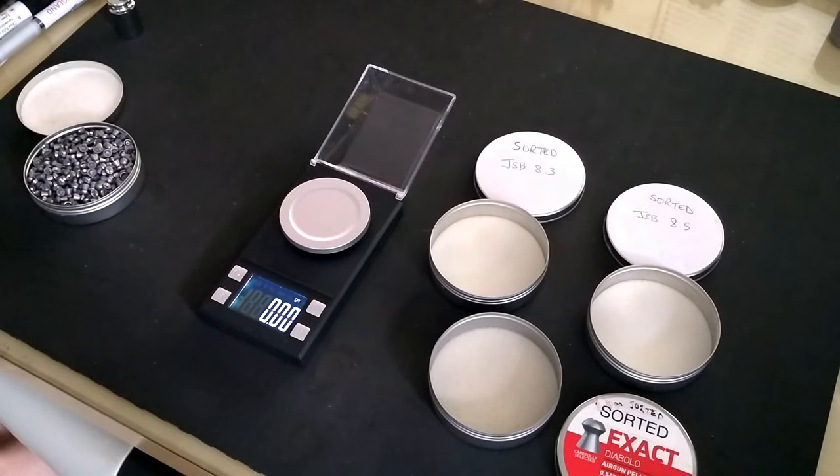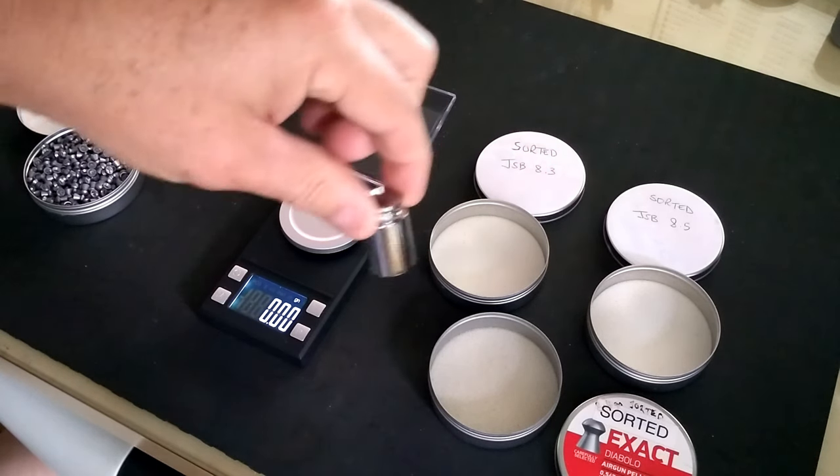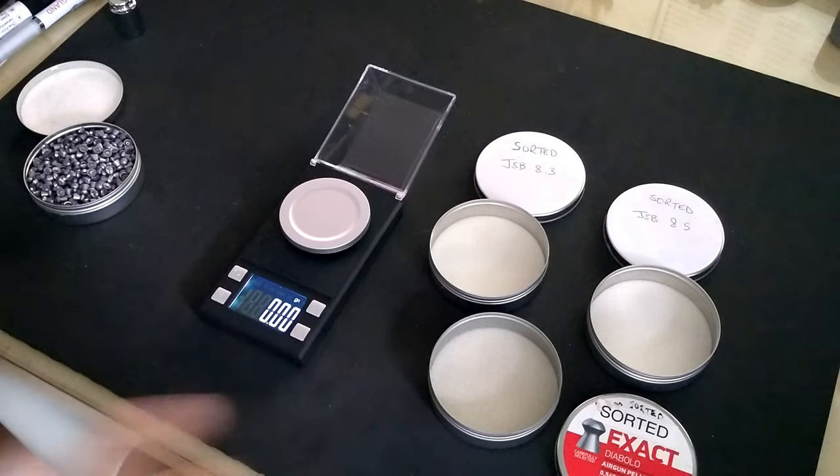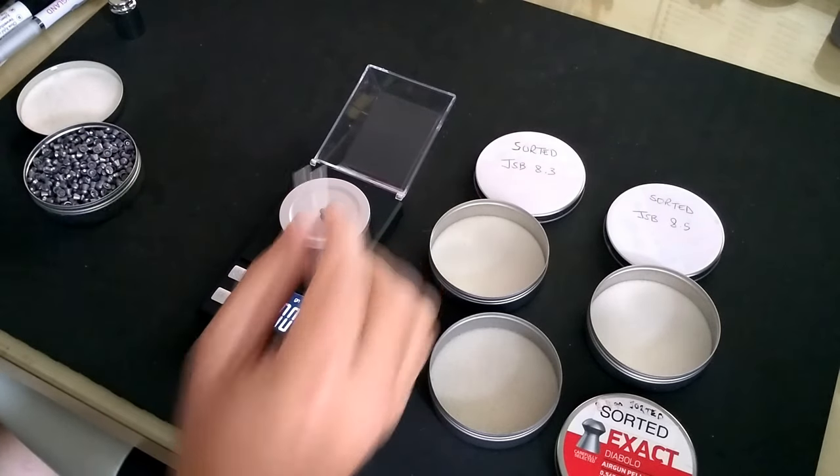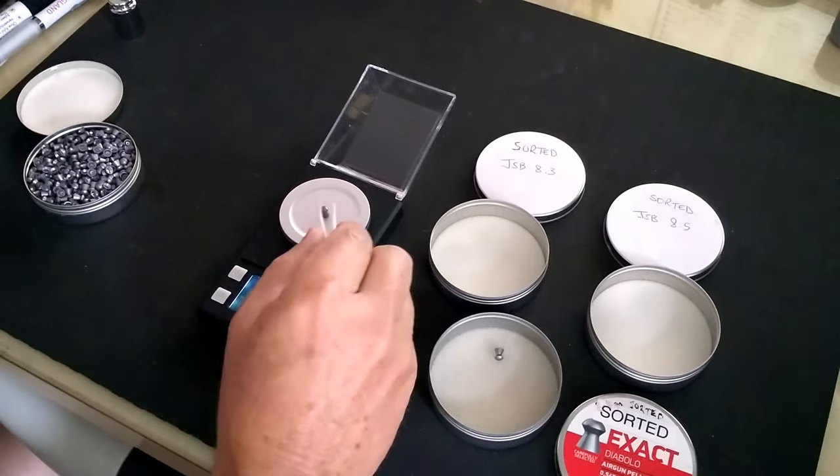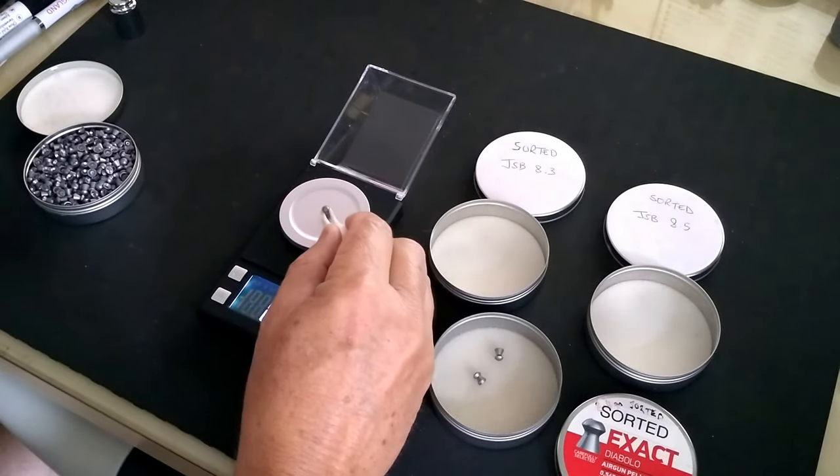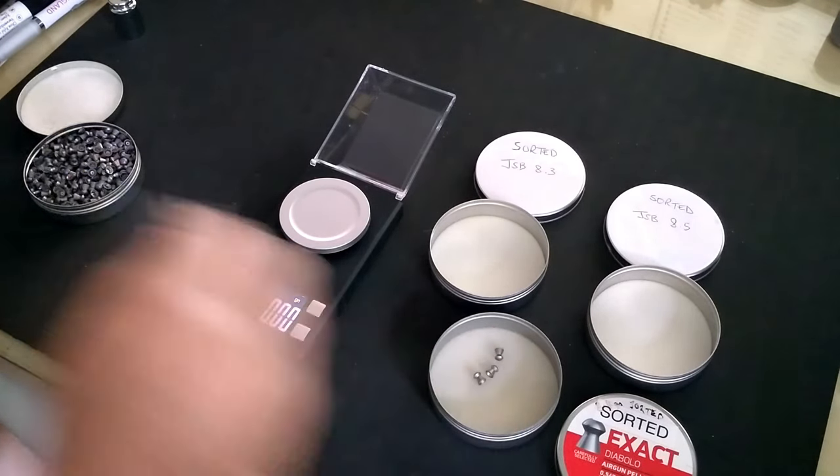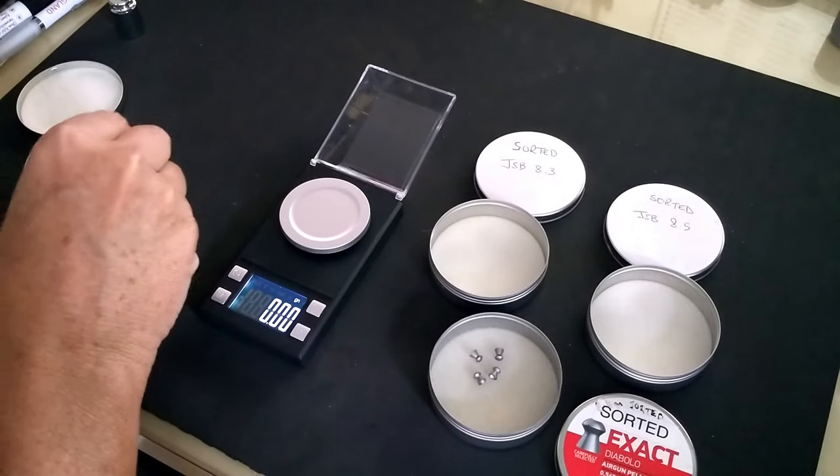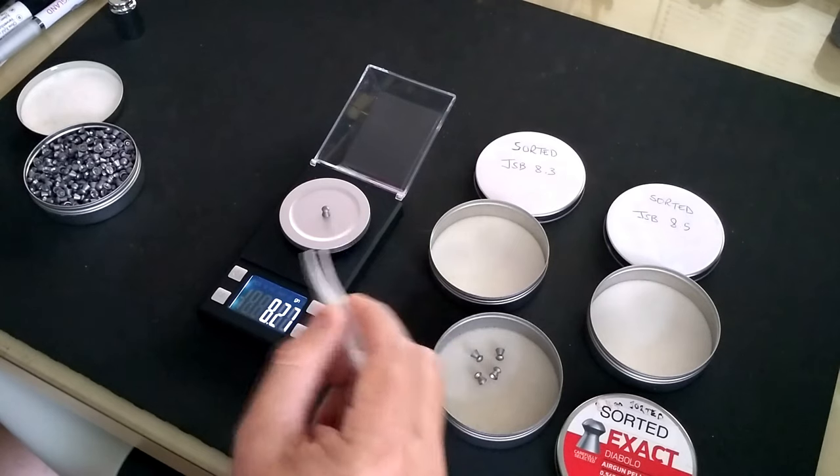We're going to weigh out some pellet samples for the test then. I've just set the scales up with the 50 gram weight so I've calibrated those. I've got three tins. I'm going to be collecting 8.3 grain, 8.5 grain, 8.4 grain pellets with enough of a sample at least 10 pellets in each tin to carry out the test. What I'm doing is I'm taking the first decimal point as the number for the tin. So that's an 8.46 so anything 8.40 to 8.49 will go in the 8.4 tin. Anything 8.50 to 8.59 will go in the 8.5 tin.